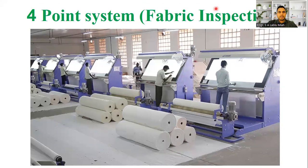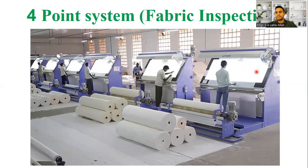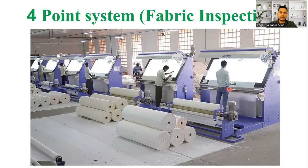We check the fabric by unrolling it on a machine that has a light effect — there is light on the box and light on the inside of the fabric, so we can see the complete fabric clearly from the inside.